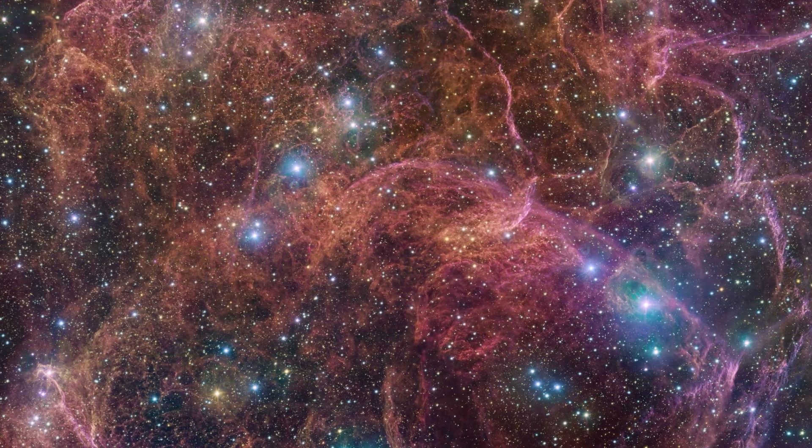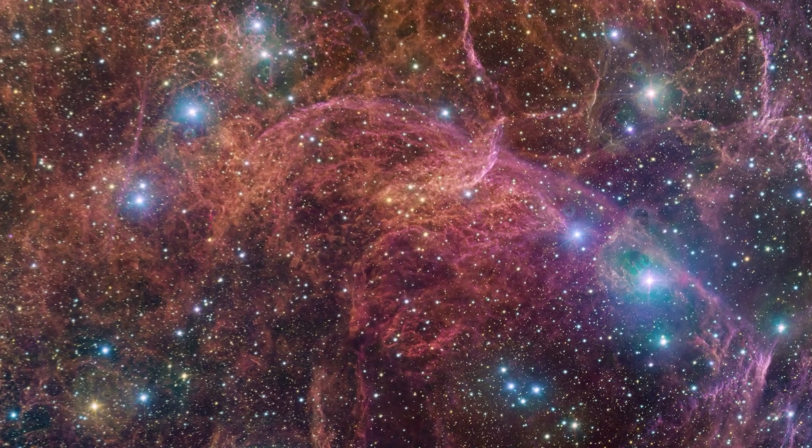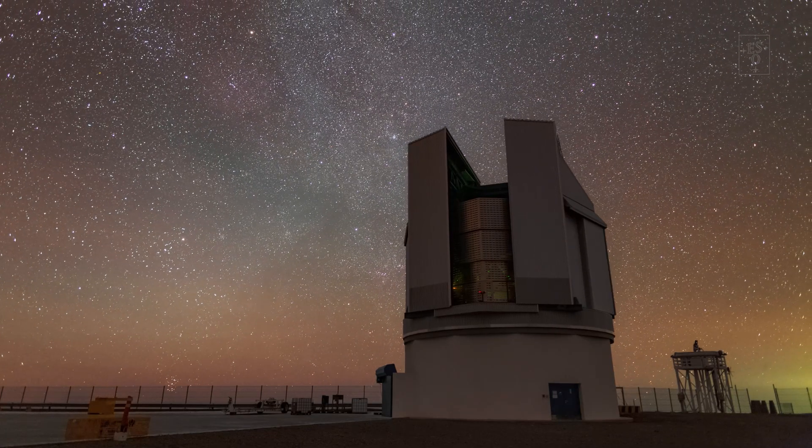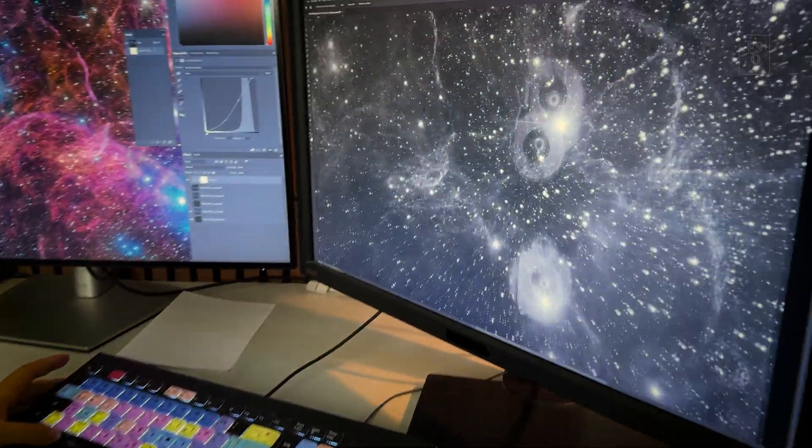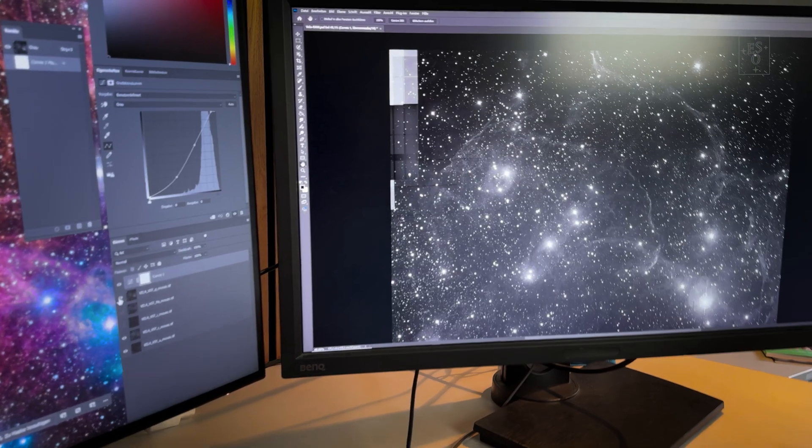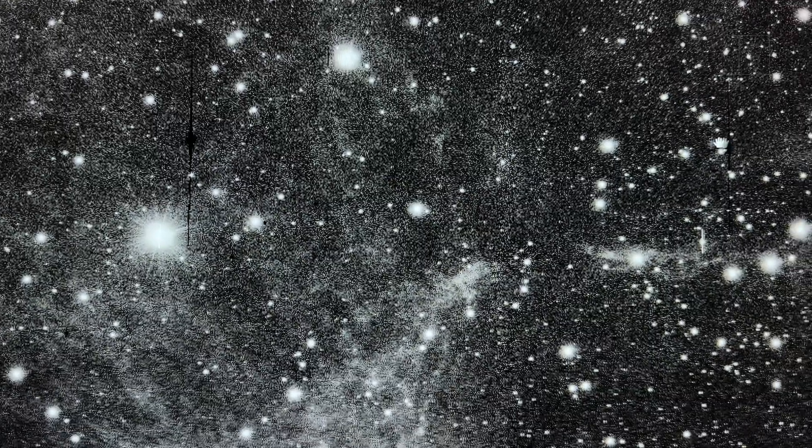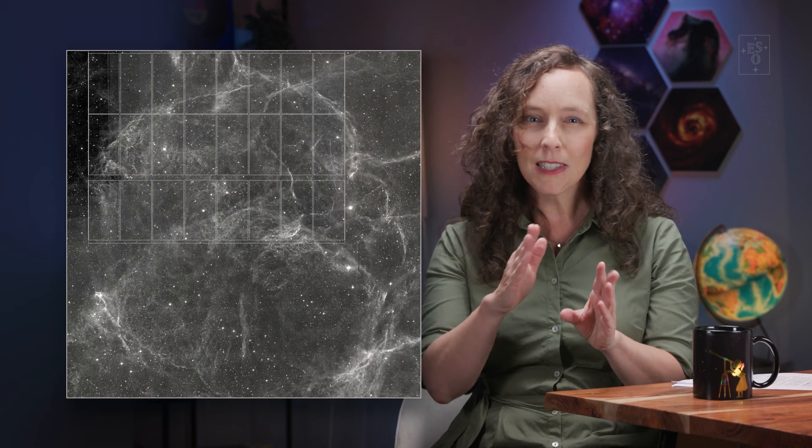But there's much more to producing an astronomical image than just assigning colors to filters and combining them. We also need to correct the raw image for defects. Take, for example, this image of the Vela supernova remnant made from five individual images taken with the VST, a telescope hosted at ESO's Paranal Observatory. On the raw image you can see, for example, dead pixels or shadows that are caused by dust, for example, in the optical path. These things are not really in the original object, so we need to correct for them. Also, the camera on the VST actually consists of 32 separate detectors, which means that we need to stitch together the individual images to produce just one. We can compensate for the gaps between the detectors by pointing the telescope at slightly different positions.